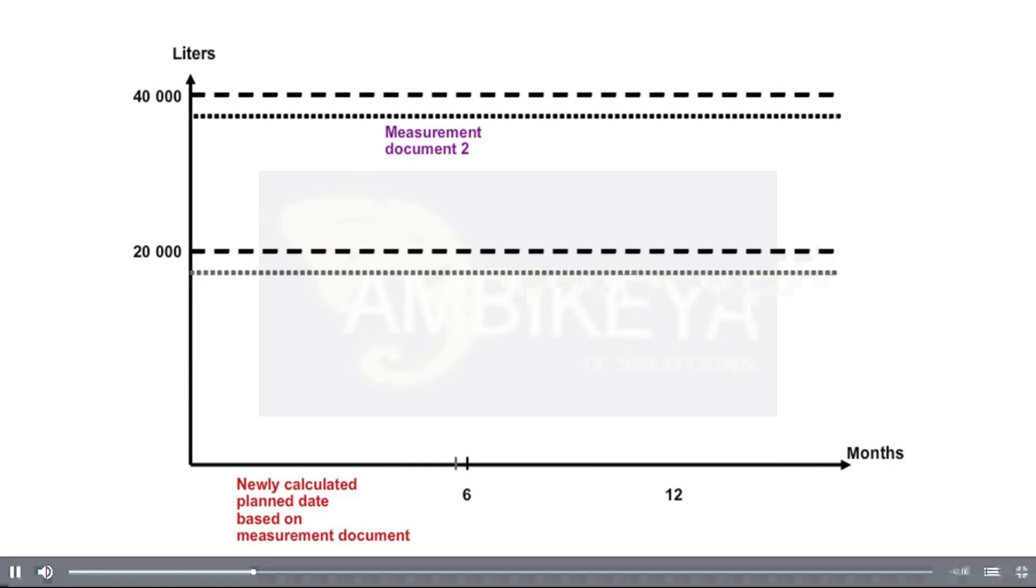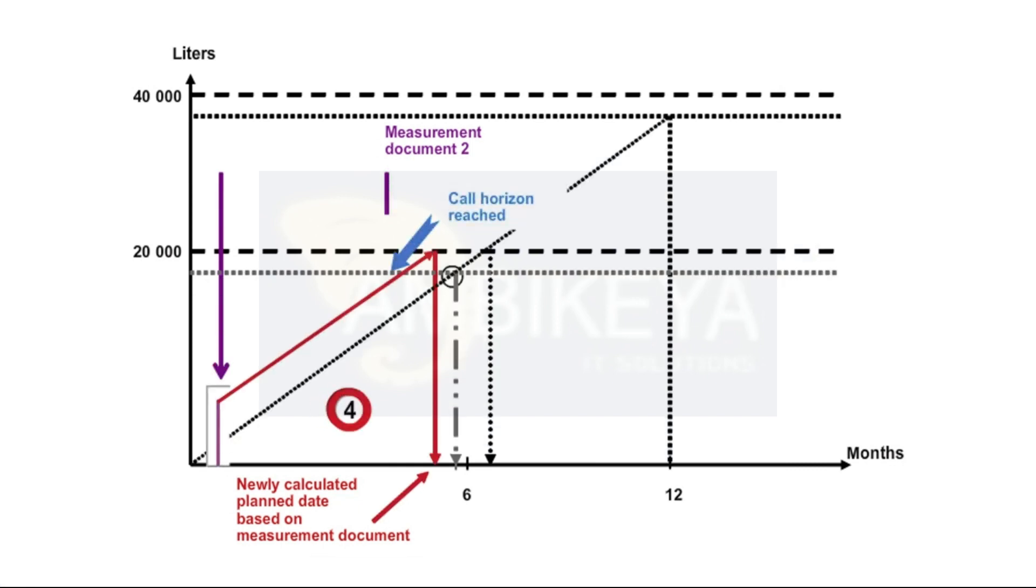If a measurement document is entered which reaches or exceeds the call horizon, the call is carried out. In other words, the order, notification, or service entry sheet is generated.